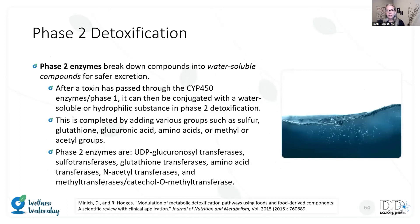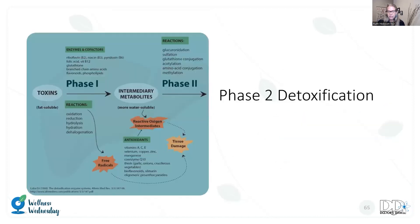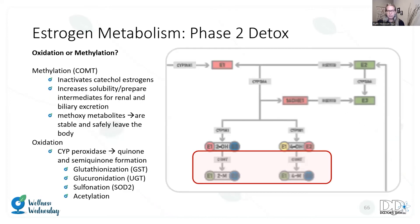Phase two detoxification is all about water solubility — taking those potentially reactive OH groups and making them more water-soluble so they can safely leave the body. The 2-OH and 4-OH estrogen metabolites move further into phase two. When thinking about phase two, the question is: are we oxidizing or methylating? Methylation is our best friend here — the COMT enzyme inactivates those catechol estrogens and increases solubility, making them safe to leave the body as methoxy metabolites. On the other side is oxidation, where a peroxidase leads to quinone or semi-quinone formation, which is dangerous with carcinogenic potential.